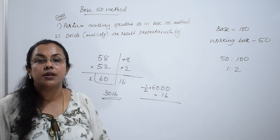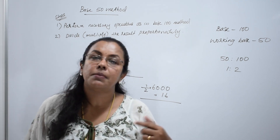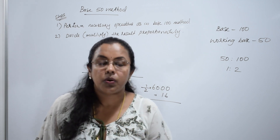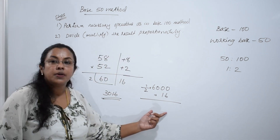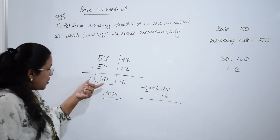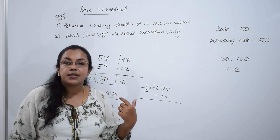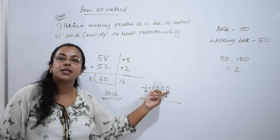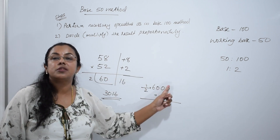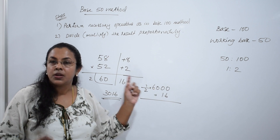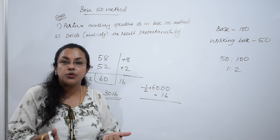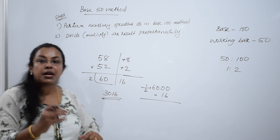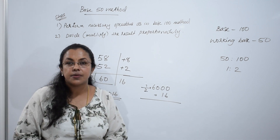I will explain this method using algebra in my next class — then it will be clear to you. Understand this much for now: only divide the left hand side. The left hand side is 60, but the complete answer is 6000. Half of 6000 is 3000. There is no need to do that much — it is simply 30, and write 16 as it is.